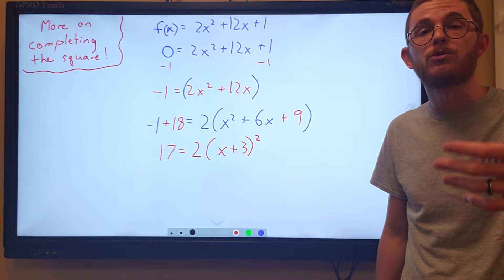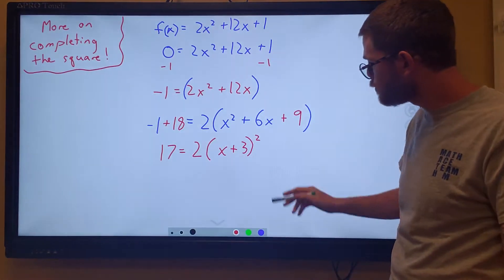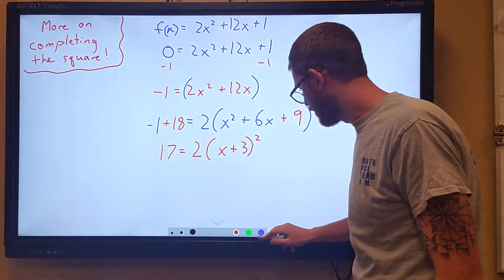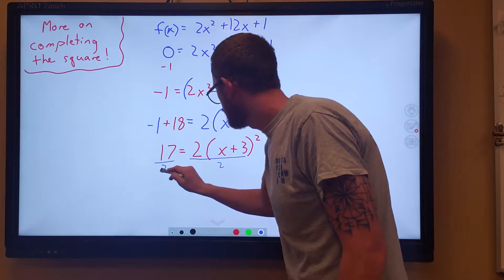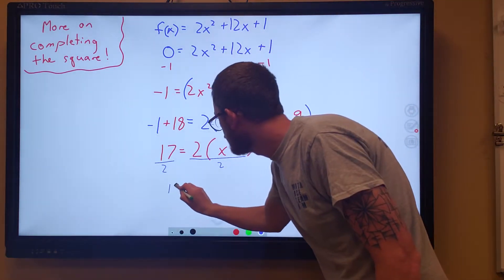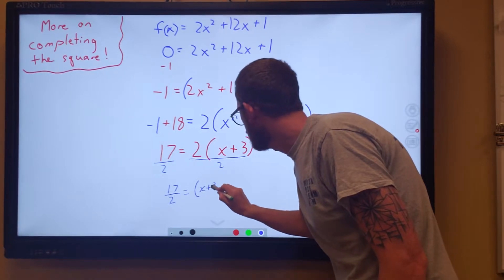We're trying to solve our equation. So we're going to divide both sides by 2. Divide both sides by 2, we're left with 17 over 2 equals x plus 3 squared.